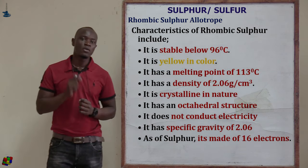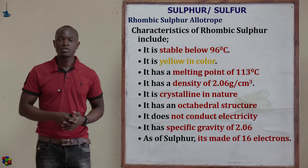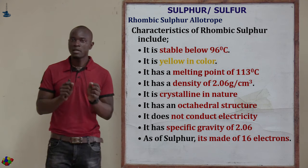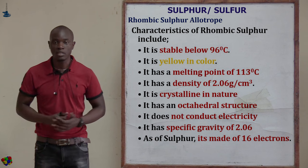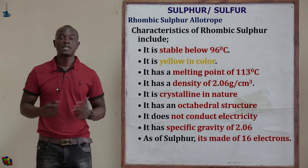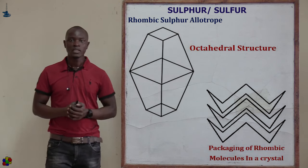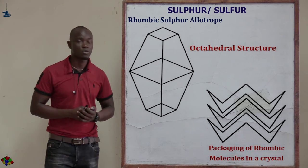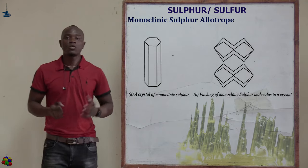Rhombic sulfur is stable below 96 degrees Celsius. Above this temperature, rhombic sulfur changes to monoclinic sulfur. The temperature at which rhombic sulfur changes to monoclinic and monoclinic goes back to rhombic is called the transition temperature. Rhombic sulfur assumes a yellow color, has a melting point of 113 degrees Celsius, and a density of 2.06 grams per centimeter cubed.